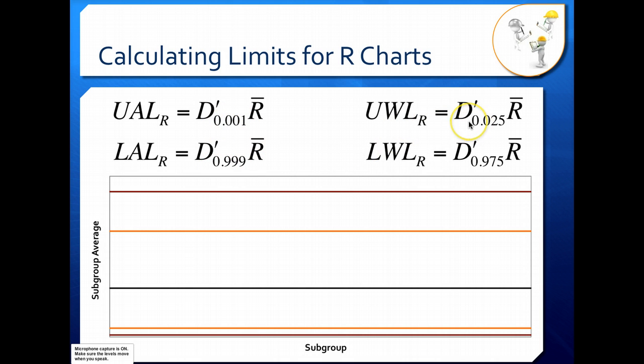When you post your process average range on your range chart, this black line, your warning limits and your action limits here shown in the orange and red respectively may not be symmetrical around your center line.